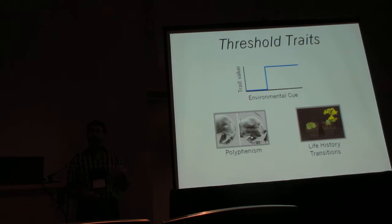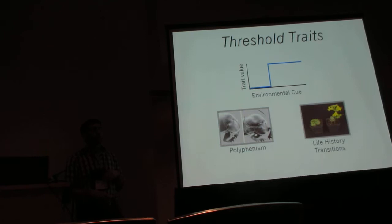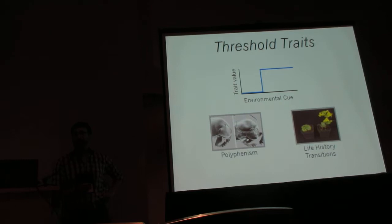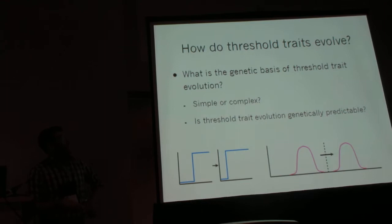However, threshold traits also play a key role in the context of life history transitions, because whether it's going from seed to seedling, egg to hatchling, or rosette to flowering, many of these key developmental choices are obligately dependent on environmental conditions so that they occur at times favorable for growth and reproduction.